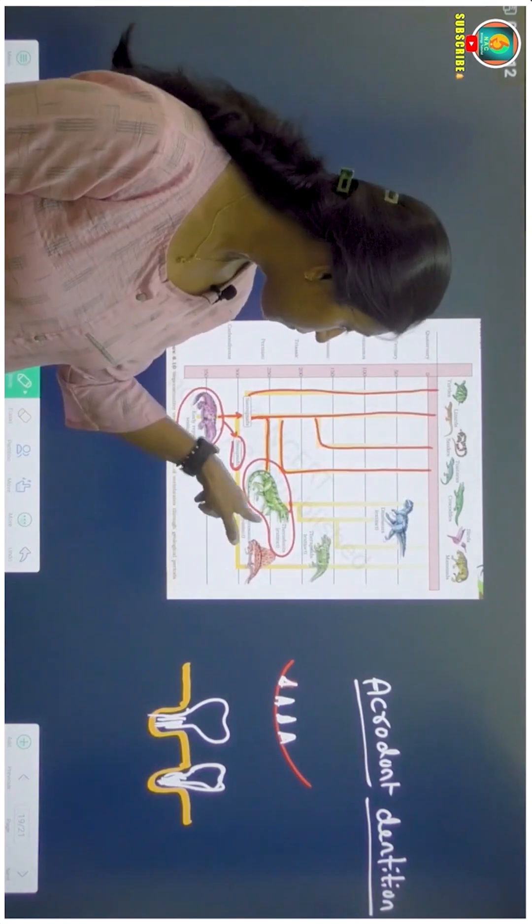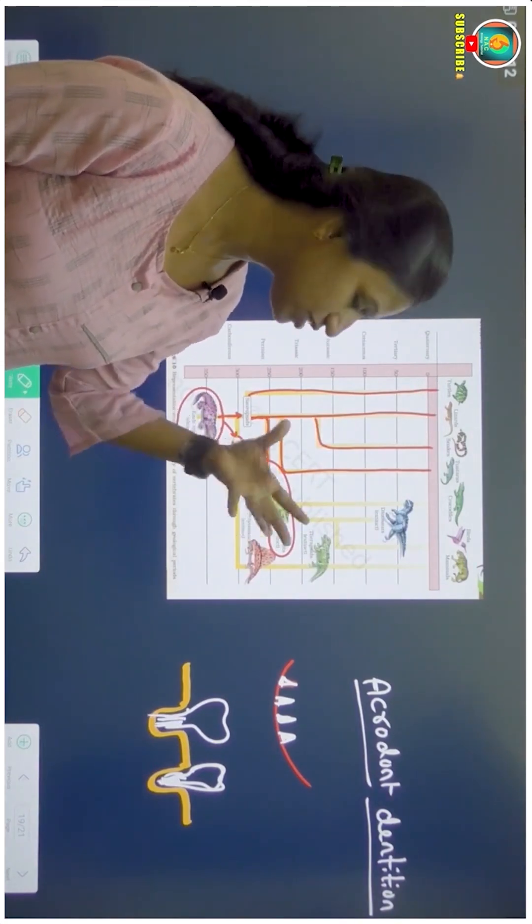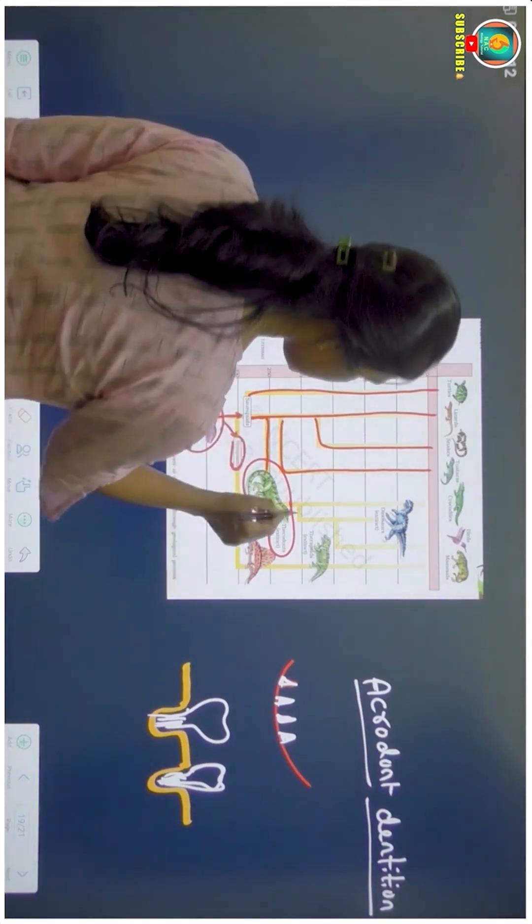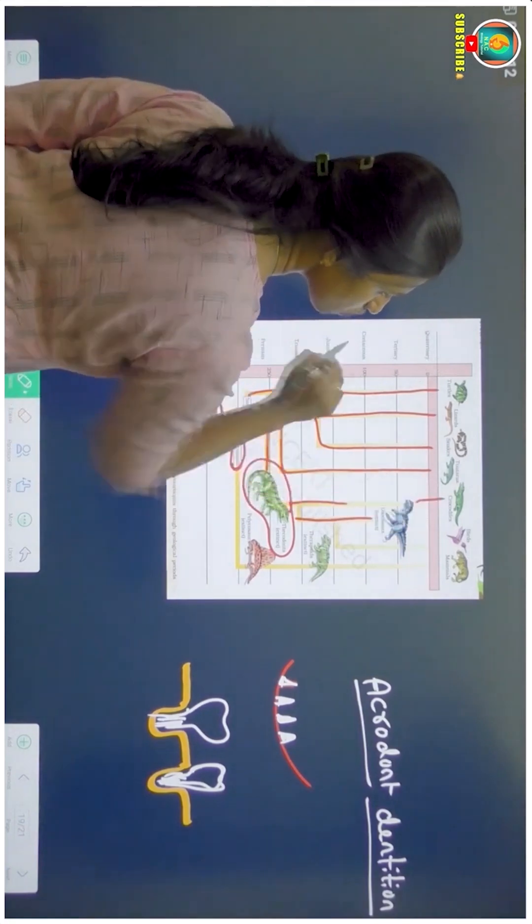Such dentition is thicodont. The reptiles which existed in this period had thicodont dentition. From this thicodont dentition of reptiles, dinosaurs arose. From these dinosaurs, crocodiles are present.